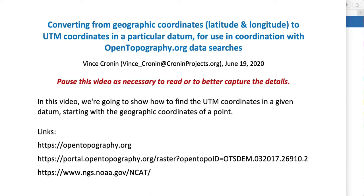In this video, we're going to show how to find the UTM coordinates in a given datum, starting with the geographic coordinates of a point. The context of the scenario is that we will use a published map to determine the latitude and longitude of the approximate point where the Polaris and Dog Valley faults intersect. Then we will extract a digital elevation model from the appropriate dataset, where the DEM will cover at least 2 kilometers from the intersection point in all directions.